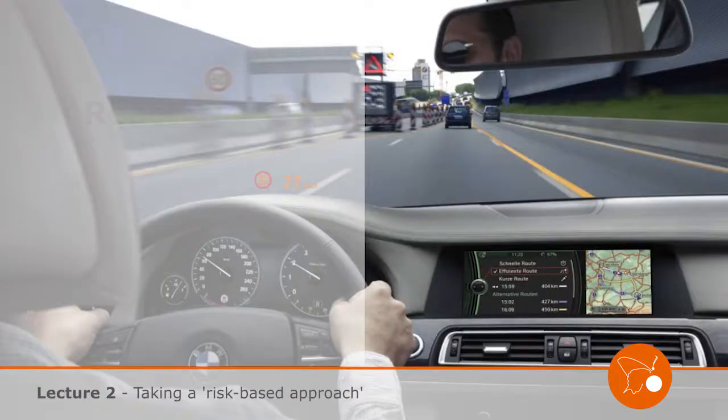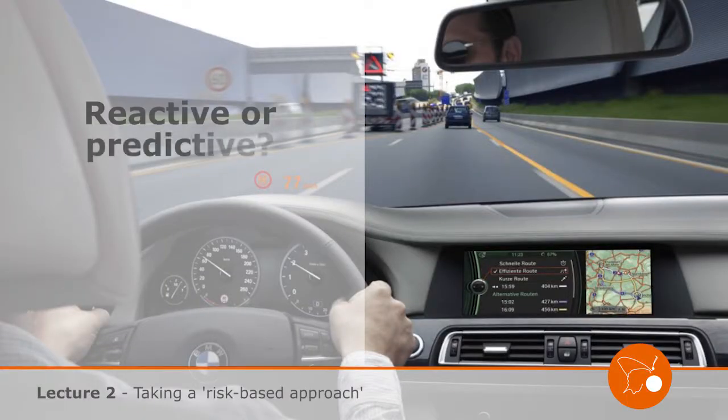A common risk-based tool that is predictive is a car dashboard with a navigation system. Traveling, for example, is nothing else than a series of decisions based on calculated risks.